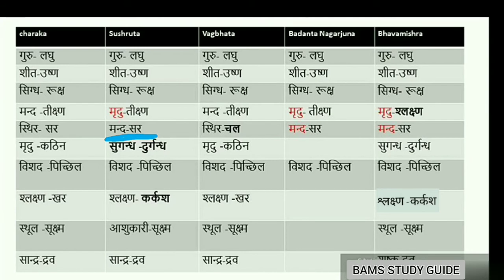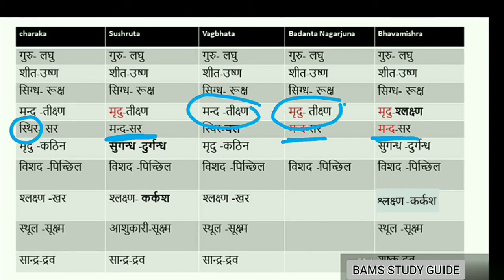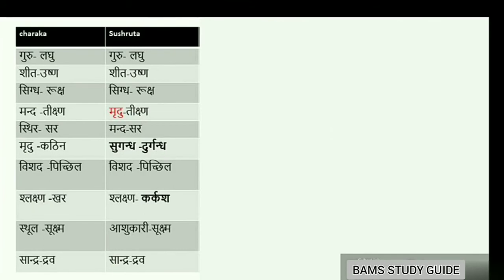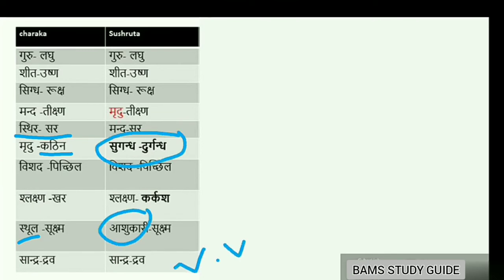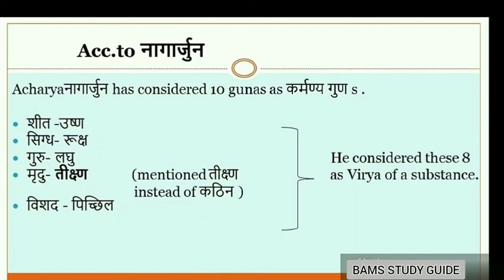According to Sushruta, Bhavmishra and Nagarjuna, Sara's opposite is Mandha. But according to Charaka, opposite of Sara is Dhira, and opposite of Mandha is Tikshna. At the same time, opposite of Tikshna is Mridhu according to Sushruta, Bhavmishra and Nagarjuna. Comparing Sushruta and Charaka, Sushruta did not mention Kadhina, Sthula, Sthira and Sara qualities mentioned by Charaka. Vyavai, Vikasi, Ashukari, Sugandha and Durgandha are unique to Sushruta.